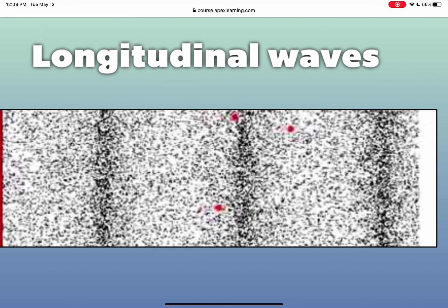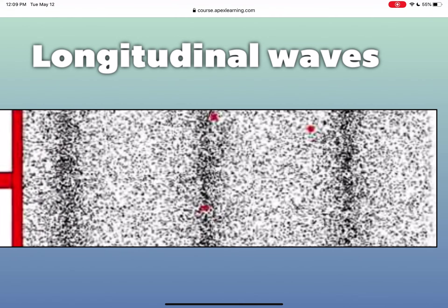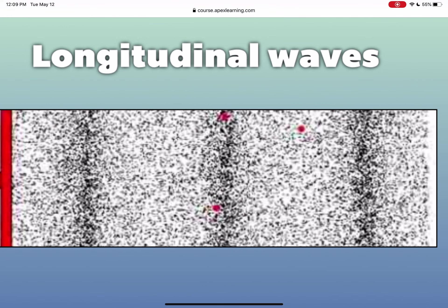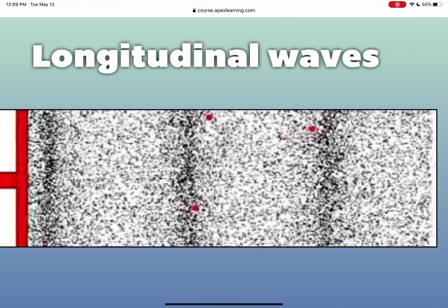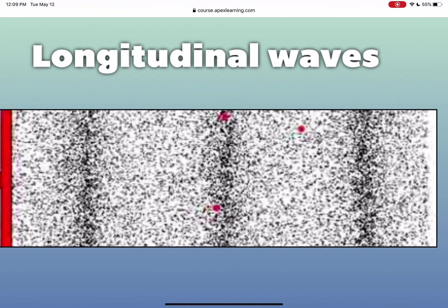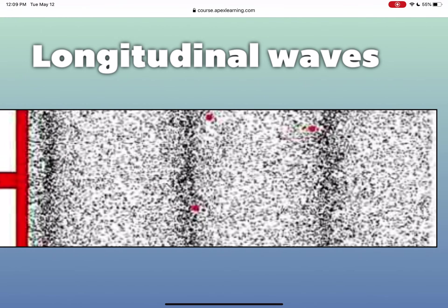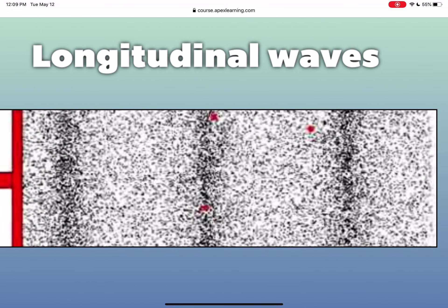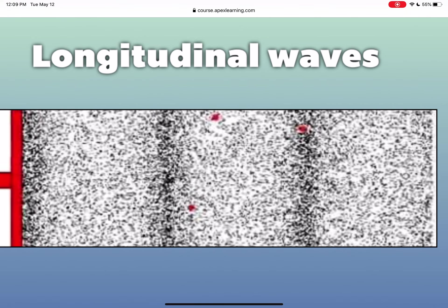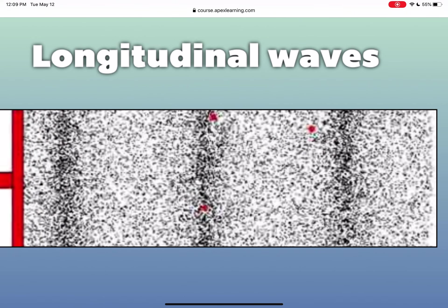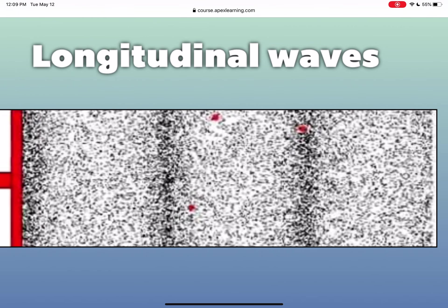Your first particles start vibrating and they bump into other air particles which start vibrating, and they bump into other air particles which start vibrating, and that's how your wave propagates. So if you are hearing a sound, these air particles are vibrating, bumping into other air particles, and eventually the air particles right next to your eardrum start vibrating, and that makes your eardrum vibrate — and that's how you hear sound.